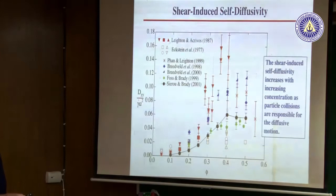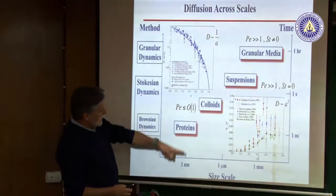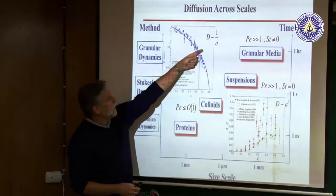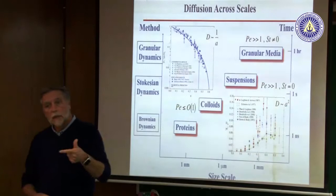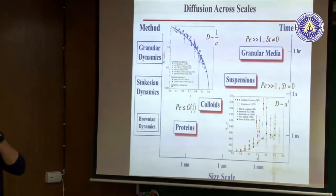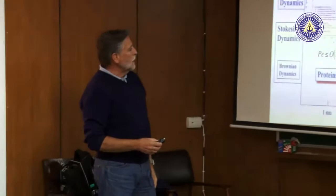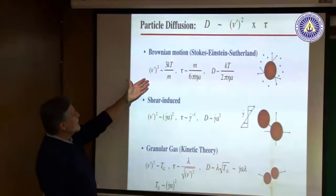As a summary: Brownian long-time diffusivity scales like one over particle size a, and decreases with concentration. Shear-induced diffusivity at high Péclet number scales like a² and increases with concentration. They scale differently with size and depend differently on volume fraction depending on which regime you're in.